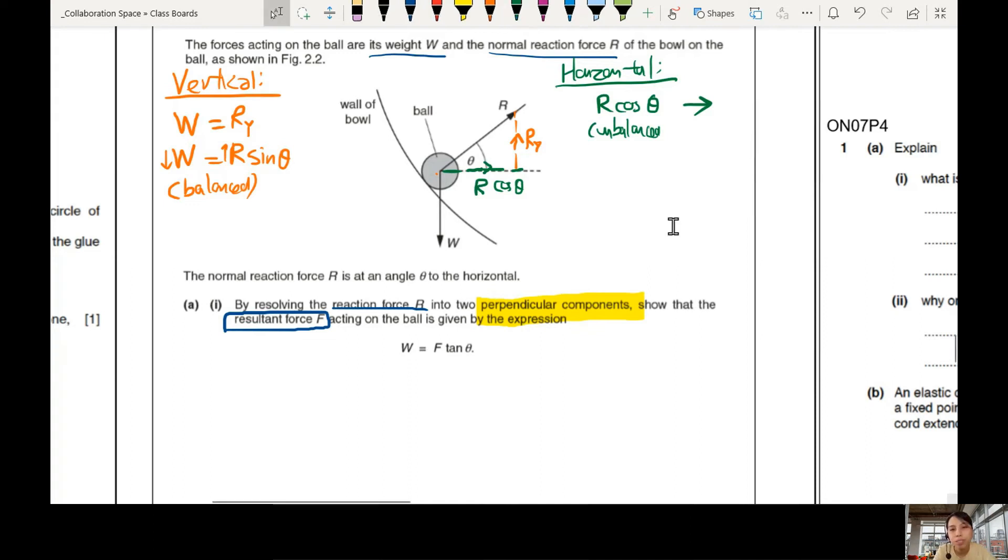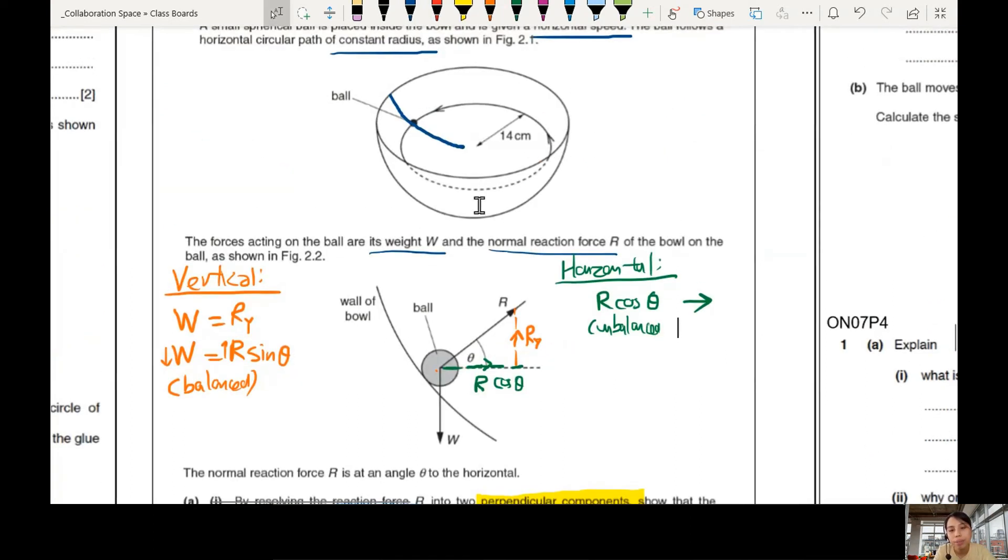Because this R cos theta is pointing to the right. So that would be the centripetal force already. There's only one force pointing to the centre of the circle. Remember, this is a circular path, we are going right around.